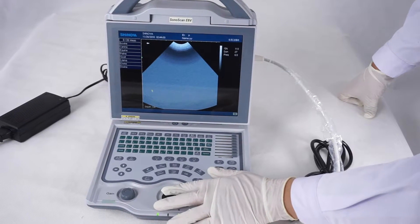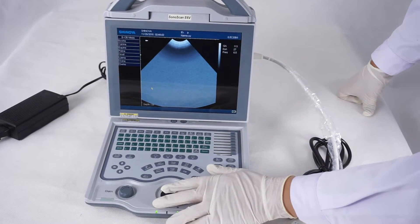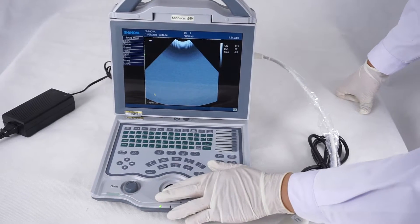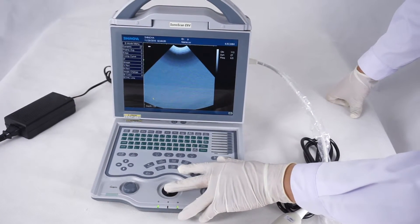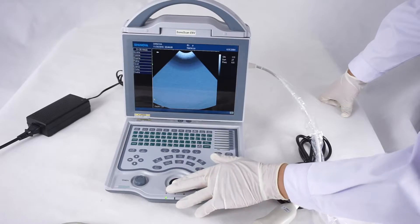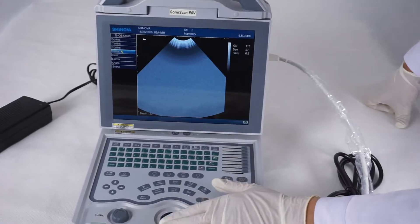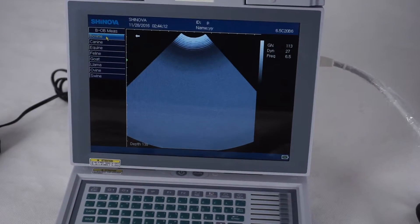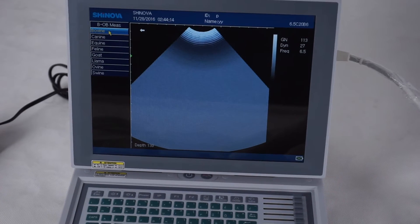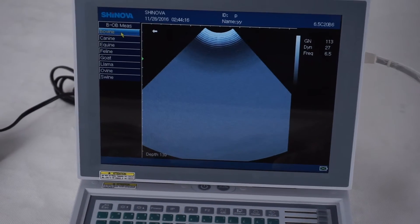When we access the B to OB measurement model, we can see different animals: bovine, canine, equine, feline, goat, llama, ovine, swine.